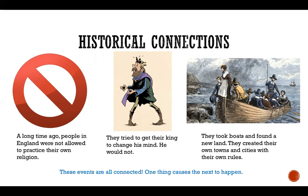He doesn't want to have them practice their own religion. So his saying no causes them to get on their boats, to find new land, and to start their own country and cities and towns where they can be free to practice whatever religion they want. These are all connections that are like puzzle pieces — this first step could not happen without all of the other steps going along with it.